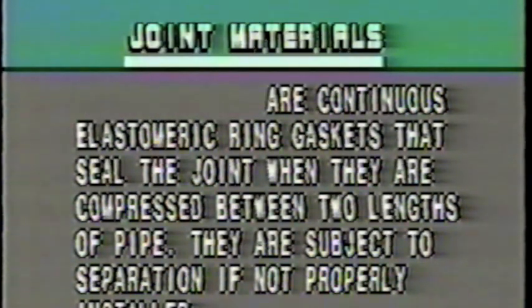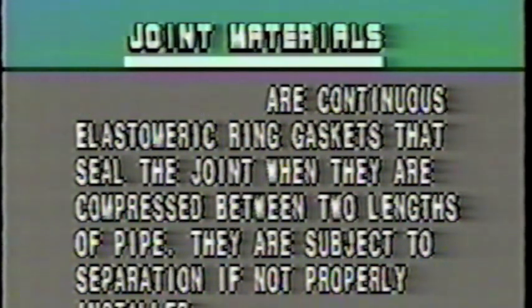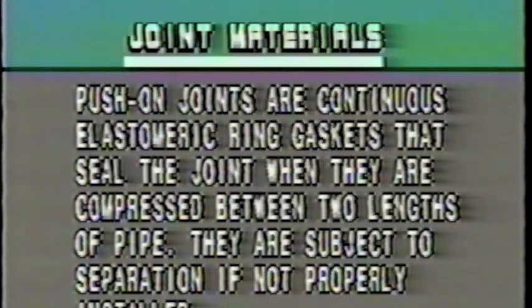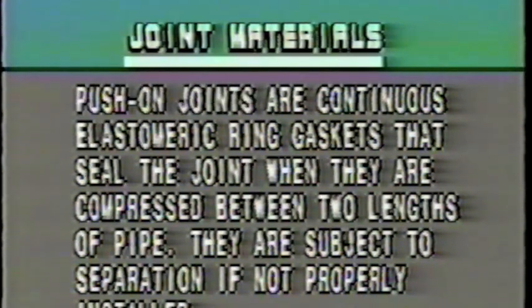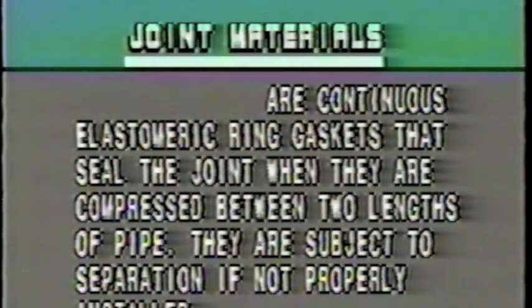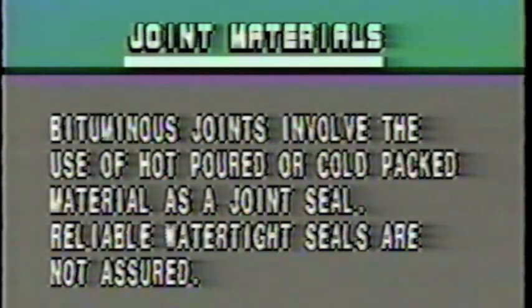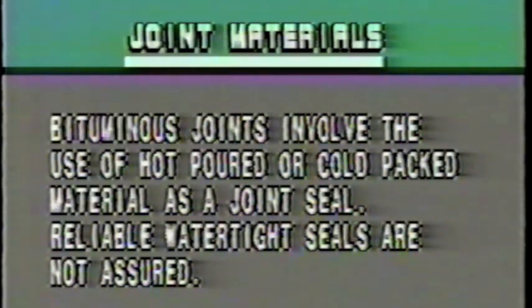Push-on pipe joints are continuous elastomeric ring gaskets that seal the joint when they are compressed between two lengths of pipe. There's also a mechanical compressing joint of this type of material. When used on pressure sanitary sewers, these are subject to separation if not properly installed. Bituminous pipe joints involve the use of hot poured or cold packed material as a joint seal. Reliable watertight joints are not assured.